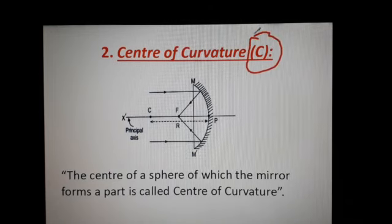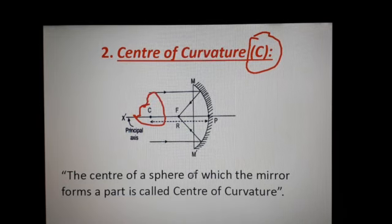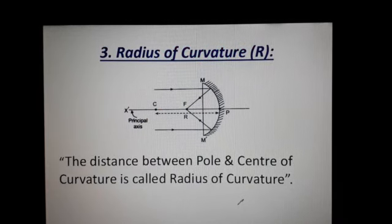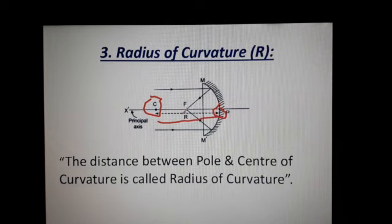Next, center of curvature: the center of a sphere of which the mirror forms a part is called the center of curvature, denoted by C. Then, radius of curvature: the distance between the pole and the center of curvature is called the radius of curvature. This distance between C and P is the radius of curvature.